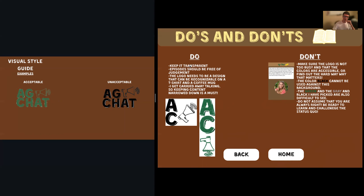With the visual style and also the editorial style, keep it transparent and free of judgment. For the design and logo, somebody told me way back that it should be something that can go on the front pocket of a t-shirt but also on a coffee mug and still be recognizable. The black and gray versions are not easy to see, so use them sparingly. As for the editorial side, an example of what not to do is thinking you know everything and that you don't have to be challenged.